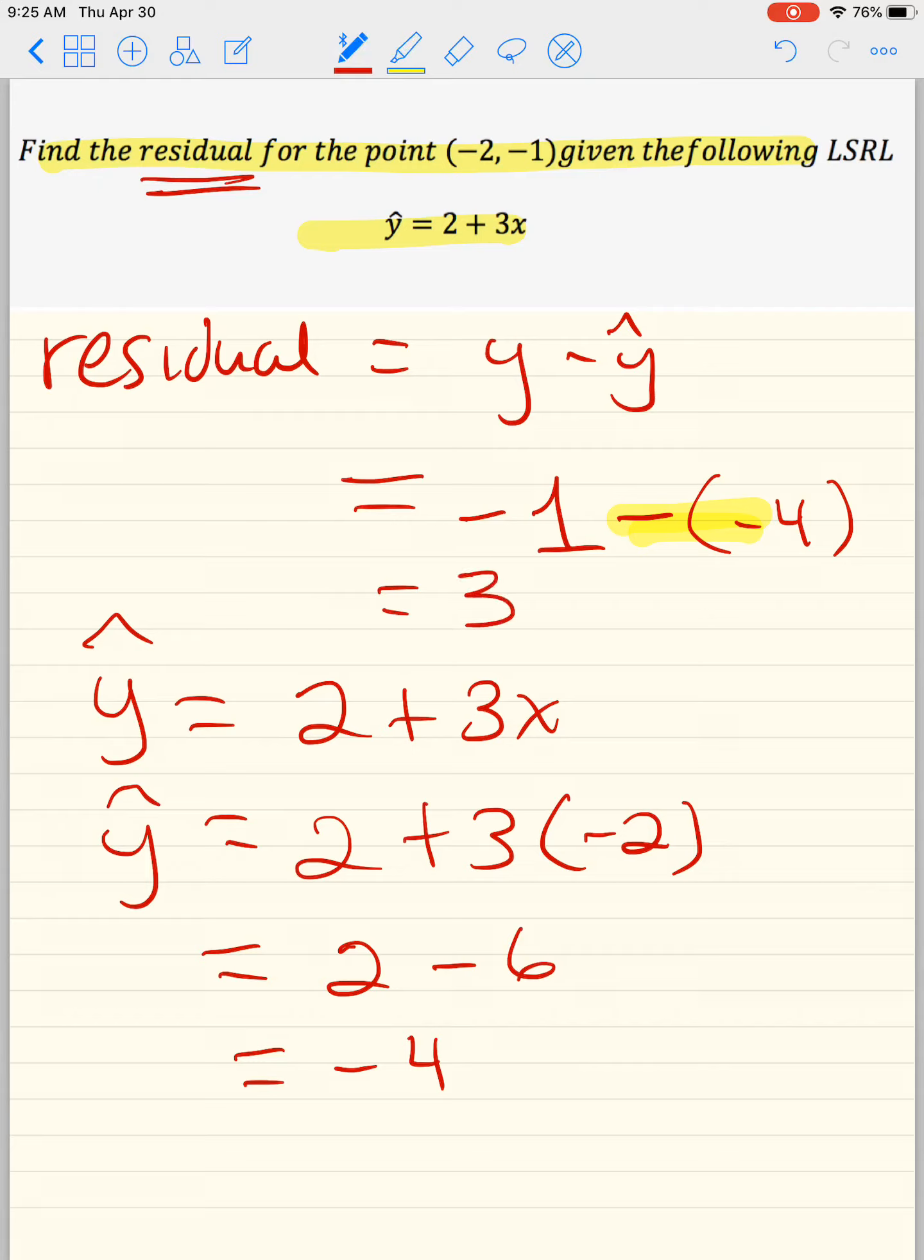So 3 is positive, so I underestimated. If you think about it, negative one and then you got negative four as your estimation. Negative four is under negative one or below it. So when it's a positive residual, it's an underestimate.